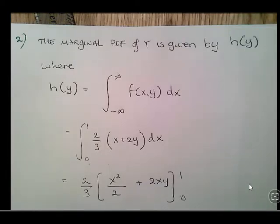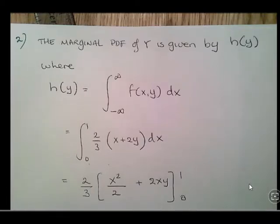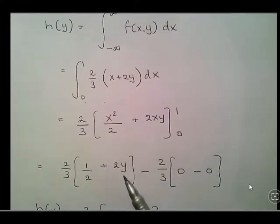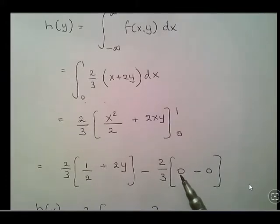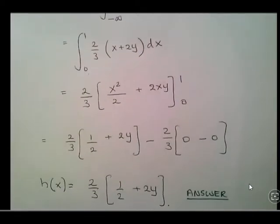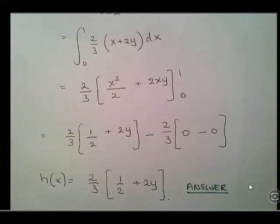Integrating with respect to x: x becomes x squared over 2, and 2y becomes 2xy. The definite integral bounds are 0 and 1. When x equals 1, x squared over 2 becomes 1 half and 2xy becomes 2y. When x equals 0 both terms are 0, so we disregard the right-hand side. The answer is h of y equals two thirds of 1 half plus 2y.